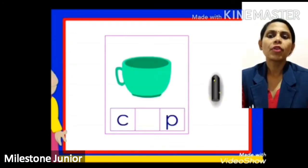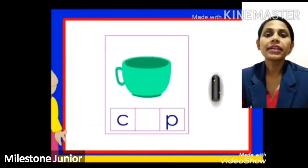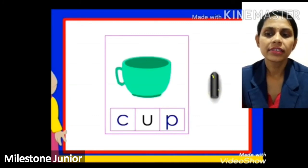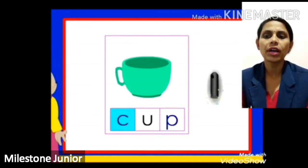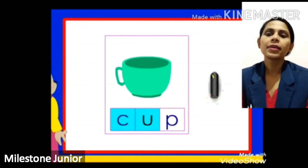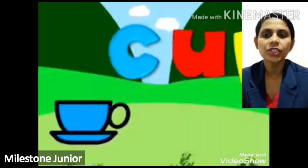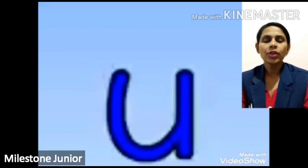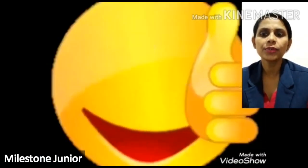Now fill in vowel U here and start reading from C. First letter is C, then vowel U, after that P — C, U, P, cup. This is the picture of cup. Now you understand vowel U. Bye bye, thank you!